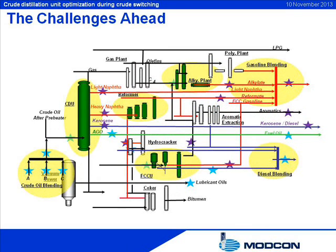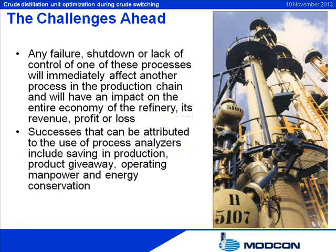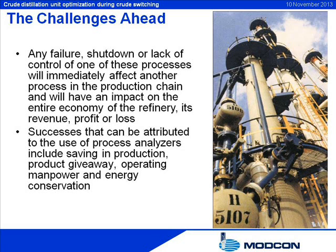Refineries are among the most complex of processing sites. Many processes are interlinked — the product of one unit serves as the feed for other consecutive processes. Any failure, shutdown, or lack of control of one of these processes will immediately affect another process in the production chain and will have an impact on the entire economy of the refinery, its revenue, profit or loss.